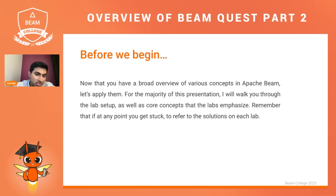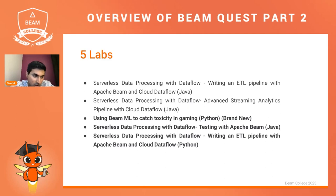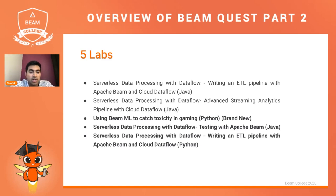Remember that if at any point you get stuck, there are always solutions you can refer to on the lab that can help drive you forward if needed. To recap, we have five labs. In part one I covered the first two. In this session, I want to cover the last three labs. The first lab I want to cover — actually a brand new lab just launching into this quest — is called 'Using Beam ML to Catch Toxicity in Gaming', which will be in Python. Then the next two will be testing with Apache Beam, and finally running an ETL pipeline with Beam and Cloud Dataflow in Python.